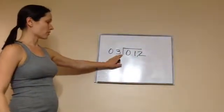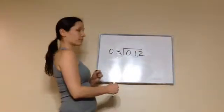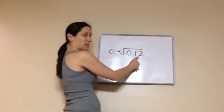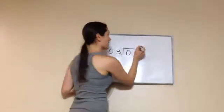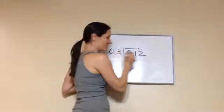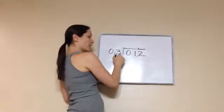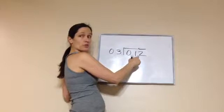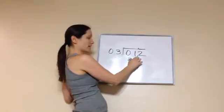This is a whole number and this is just a decimal number. We just work it like usual. So what should I do with this decimal? I'm going to slide it up. Slide it up right here. Now we're gonna go three goes into twelve. You act like this decimal is not here when you're working it.